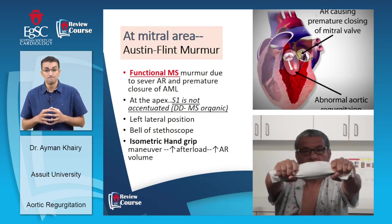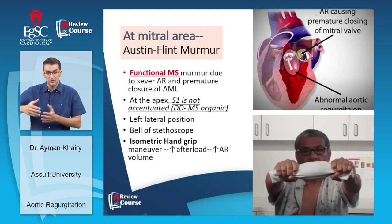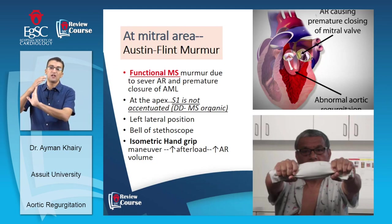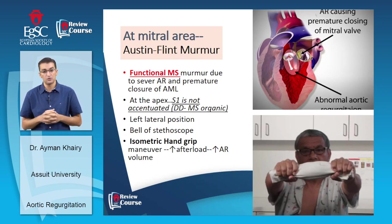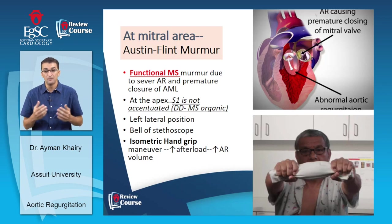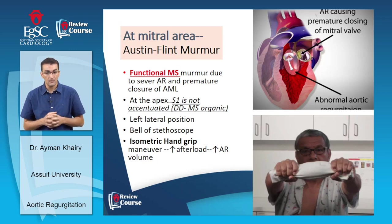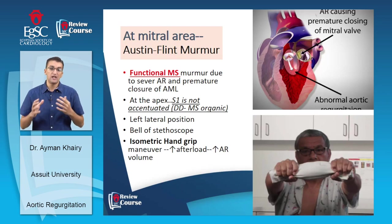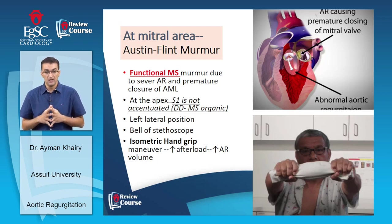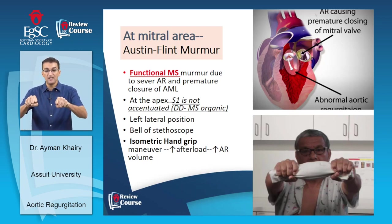On the mitral area you will appreciate an Austin Flint murmur — a functional mitral stenosis murmur due to severe aortic regurgitation impinging on and causing premature closure of the anterior mitral leaflet, resulting in a functional mitral stenosis and a rumbling diastolic murmur at the apex. The difference from organic mitral stenosis is that the first heart sound is not accentuated in Austin Flint murmur. It is best heard in the left lateral position with the bell of the stethoscope and increases with isometric handgrip maneuver, which increases afterload and augments the aortic regurgitation.